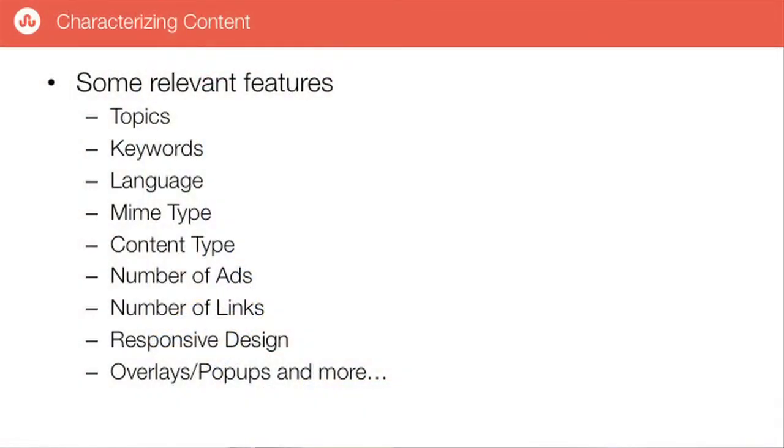Content understanding. Our content understanding, we do shallow parsing or very information retrieval based NLP stuff. We don't do deep parsing. It's always at the statistical machine learning level of things. Some relevant features, content features we deal with are topics, keywords, language, MIME type, content type. Content type in the sense YouTube would be a video. Number of ads, number of links, responsive design. It's an important feature for us because we have devices, overlays, pop-ups, and lots more.